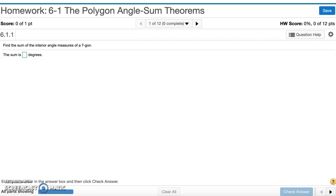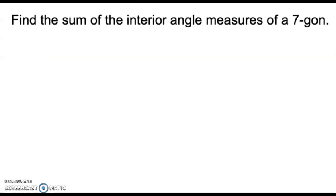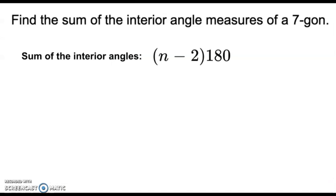Number six, the polygon angle sum theorems. Number one wants you to find the sum of the interior angle measures of a heptagon. To find the sum, we have to use the formula for it, which is n minus 2 times 180.